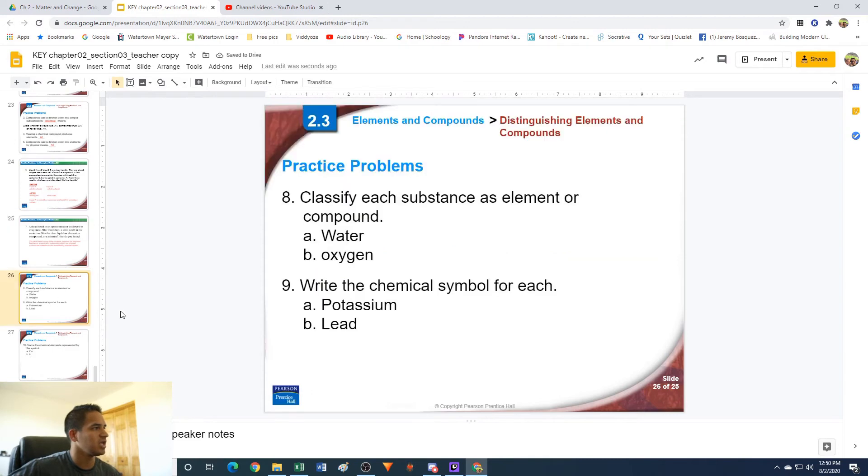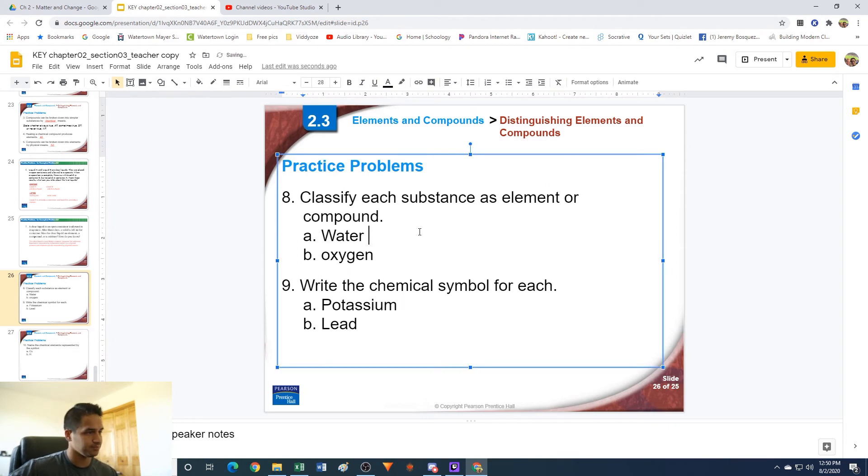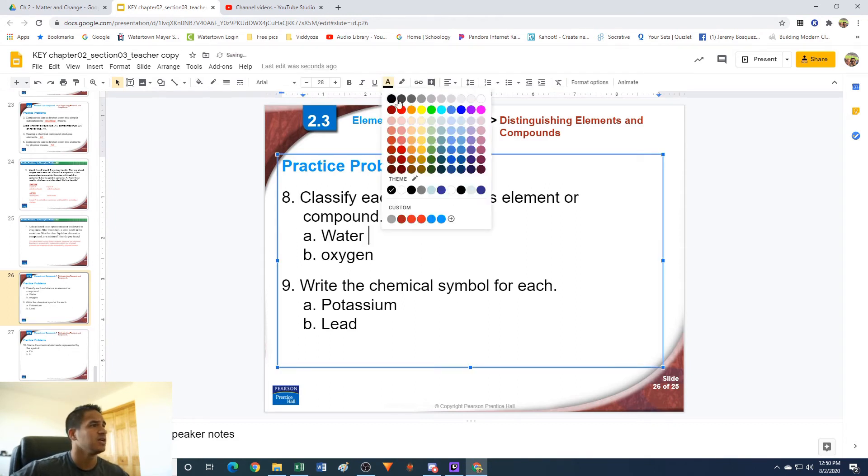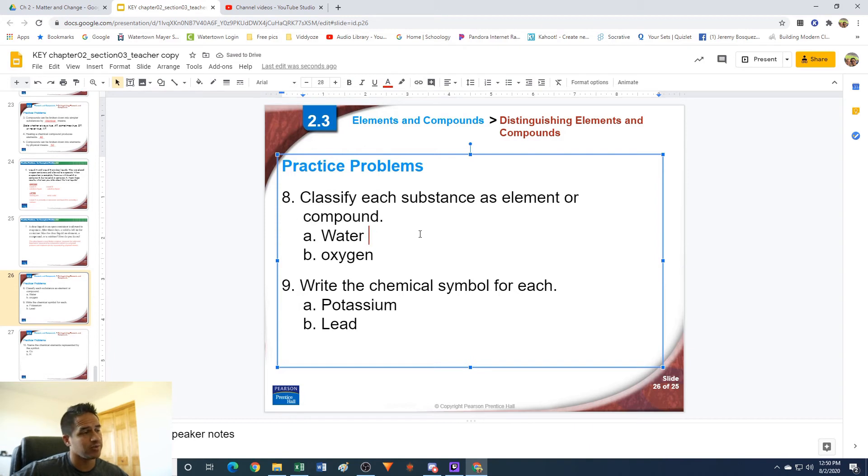Looking at number eight: classify each substance as an element or a compound. Water—you probably know that water has a chemical formula of H2O. That means it's made out of hydrogen and oxygen. Hydrogen is an element, oxygen is an element. So water, which is made out of two elements, would make it a compound. Oxygen, on the other hand, we already know that oxygen makes up water, so it's clearly smaller than water. Therefore, oxygen is an element. And it's on the periodic table of elements, so we know it's an element.